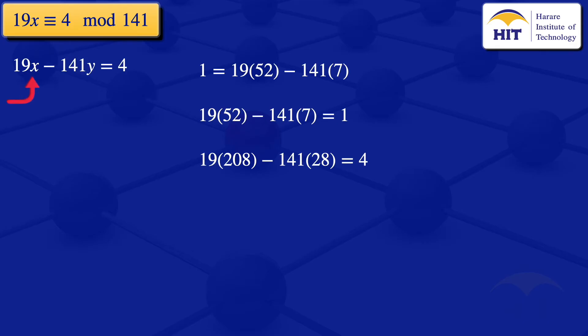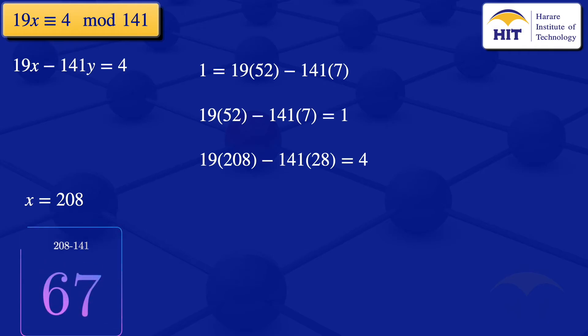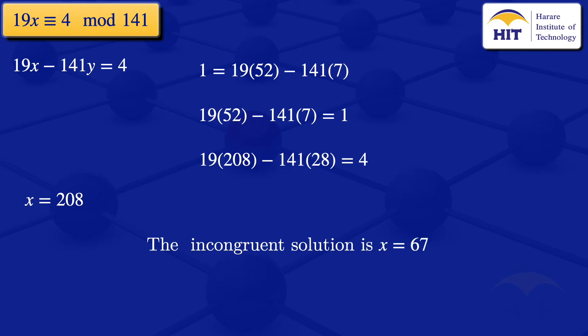Comparing with equation 1 (19x − 141y = 4), we see by comparison that x = 208. However, we need a solution with 0 < x < 141. Since 208 > 141, we subtract the modulus: 208 − 141 = 67. Since 67 is greater than 0 and less than 141, our incongruent solution is x = 67.